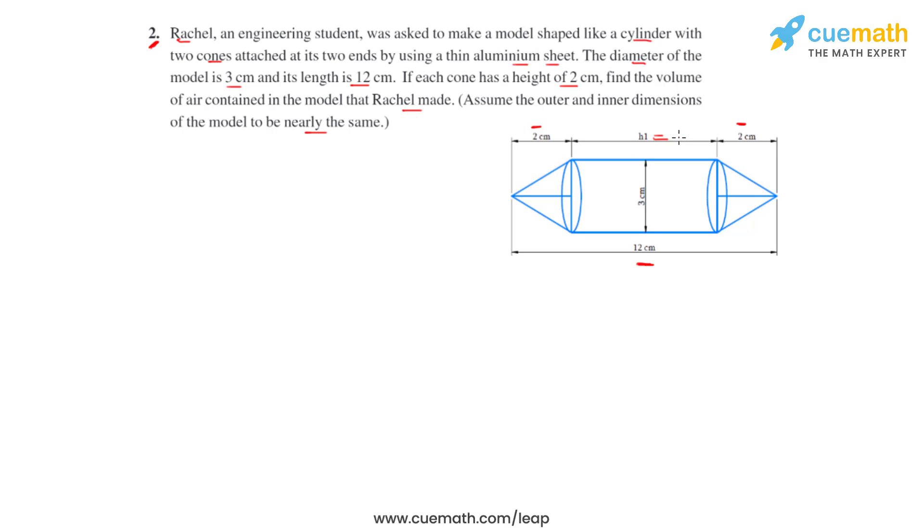The diameter is the same for both the cylinder and the cone. The diameter is equal to 3 centimeters as given in the question, so the radius will be equal to half of it, which is 1.5 centimeters. We take H1 as the height of the cylinder and H2 as the height of each cone, which is 2 centimeters.